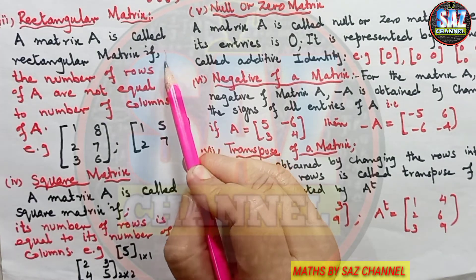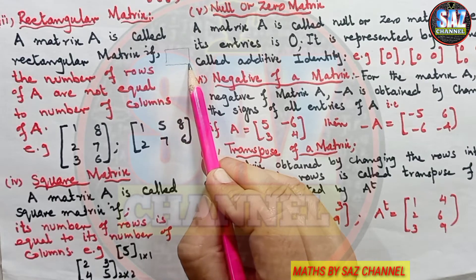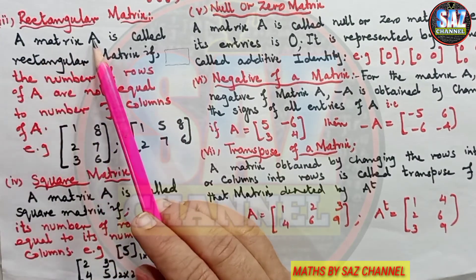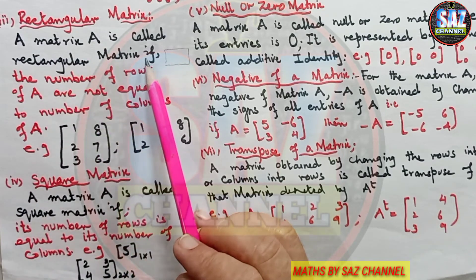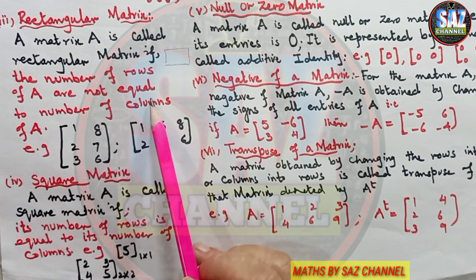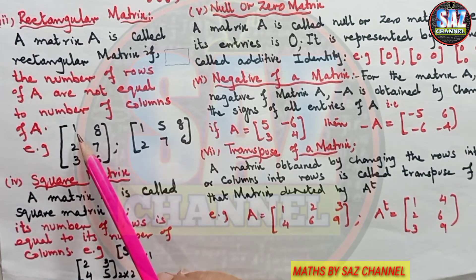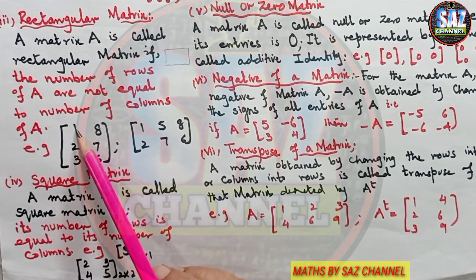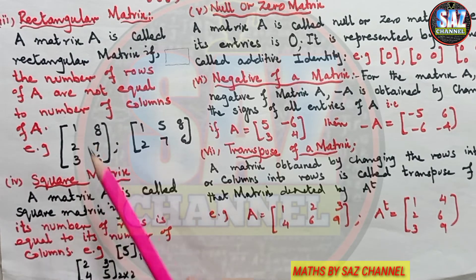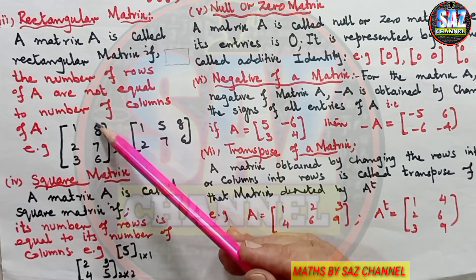Next is the rectangular matrix. We can get the idea from the word 'rectangle' — a four-sided shape where length and breadth are not equal. So a matrix is called the rectangular matrix if the number of rows of A is not equal to the number of columns of A. For example, this matrix has three rows and two columns.